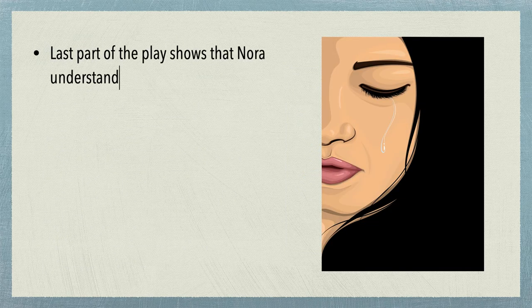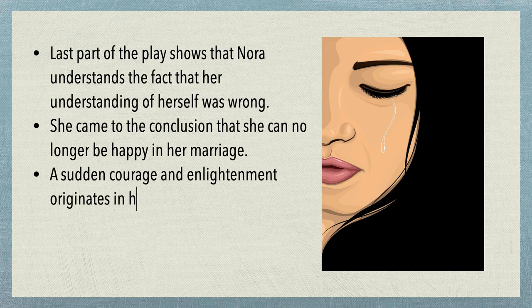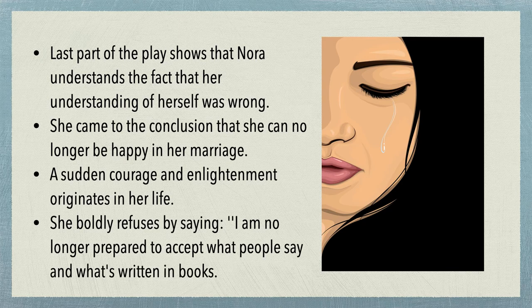The last part of the play shows that Nora understands that her understanding of herself was wrong. She comes to the conclusion that she can no longer be happy in her marriage. A sudden courage and enlightenment originates in her life. She boldly refuses, saying: 'I am no longer prepared to accept what people say and what is written in books.' Nora's climactic transformation into a mature, bold, courageous, and independent woman forms a crucial part of her personality.